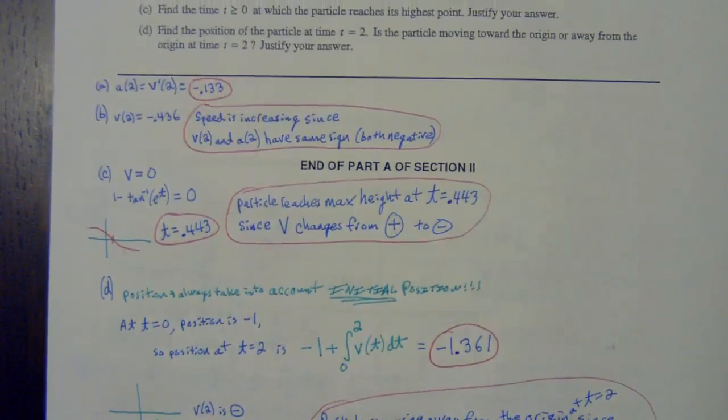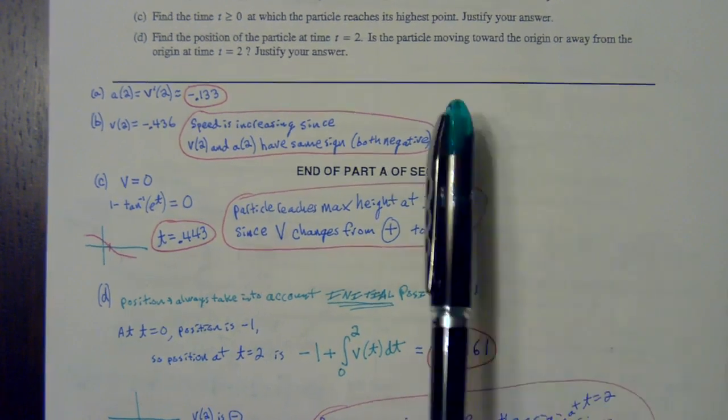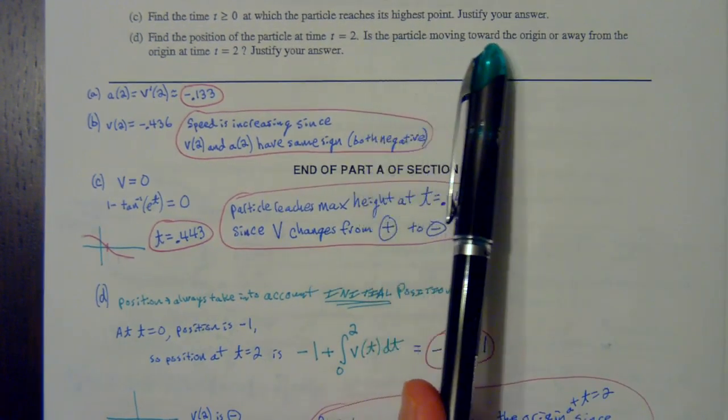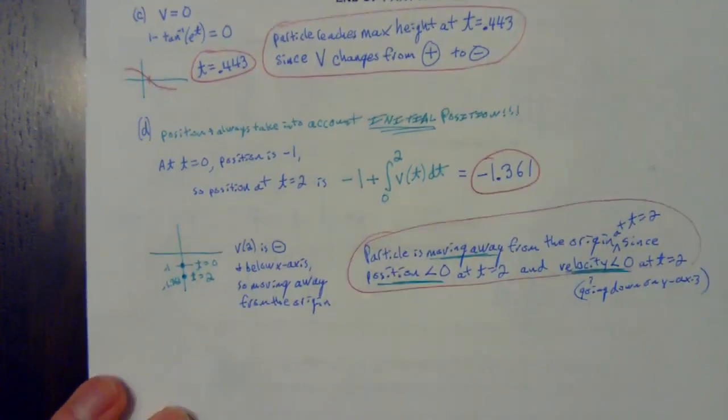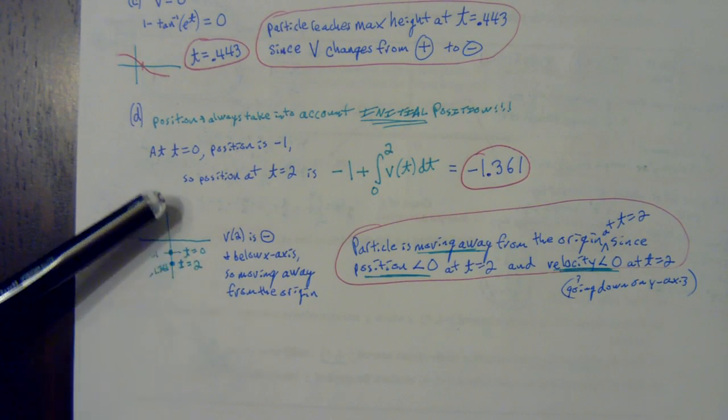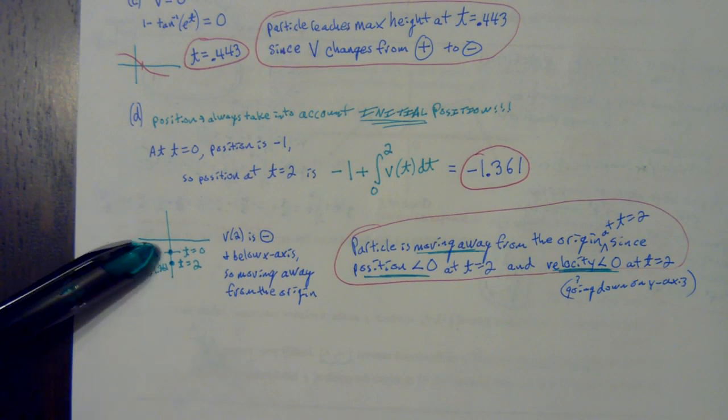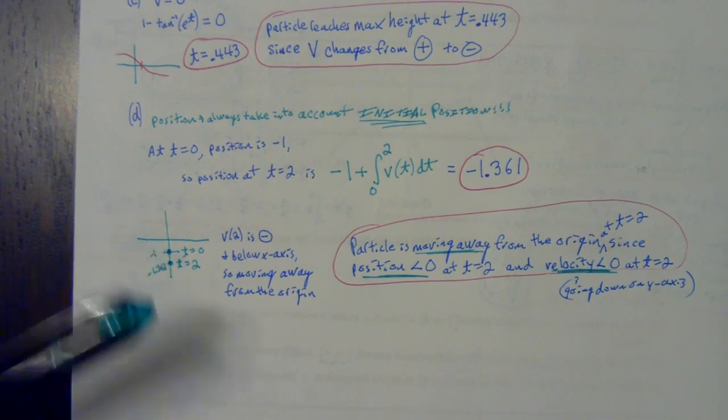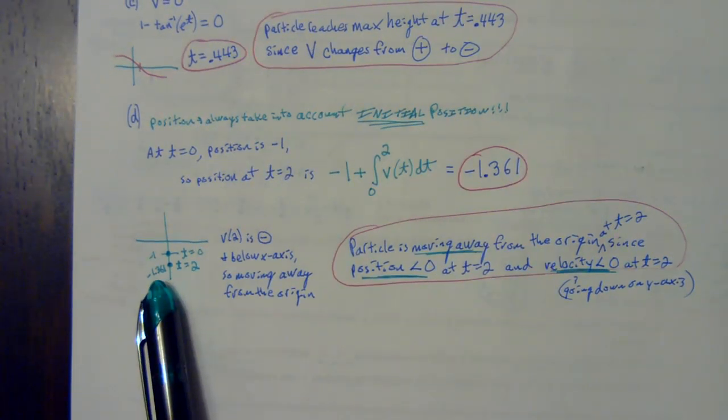The last part was kind of tricky, but we already racked up a bunch of points on this problem. It says, is the particle moving towards the origin or away from the origin at time t equals two? Here you got to reason this out. They told you when t was equal to zero, when you first started, you're only going up and down the y-axis. They told you you're at y equals negative one. Then you calculated after two seconds, now here's my position. After two seconds, I'm at that y value of negative 1.361.